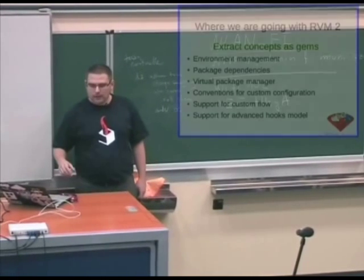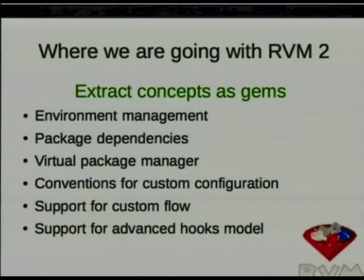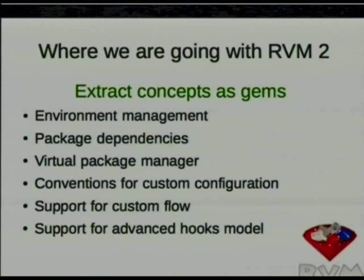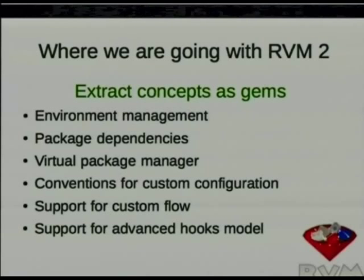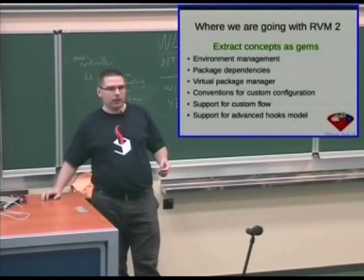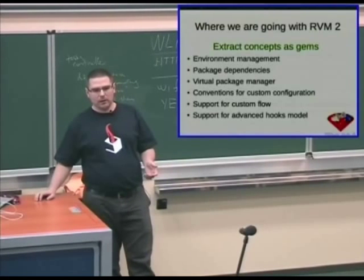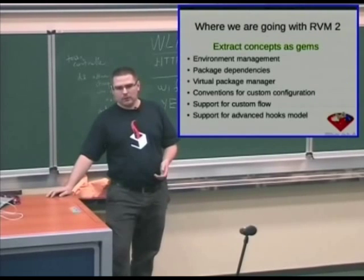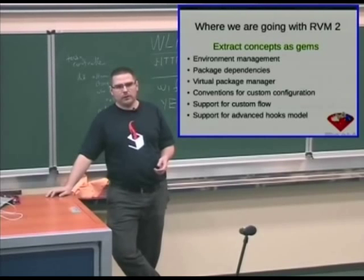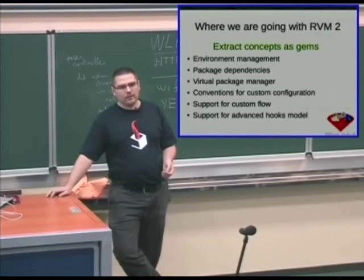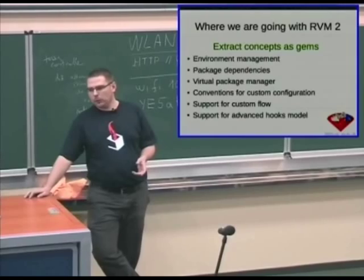We will extract concepts as gems. The first most important thing of RVM is switching environments, and we want to extract that to allow switching not only Ruby environments but also other systems like Python, Java, Erlang, and other implementations. There are a lot of tools and languages that don't have these tools, or don't have them in the full scope that RVM allows. We want to fill that gap, and finally provide a common specification for your application — so it's not that you specify an RVM RC for Ruby version, then a virtual file, then a custom file for JavaScript, then a separate file for Travis. It should be possible to switch versions for the whole project across different languages.